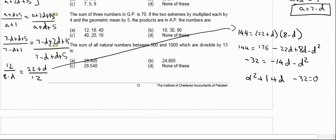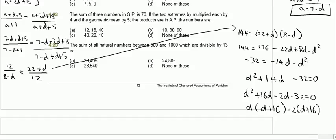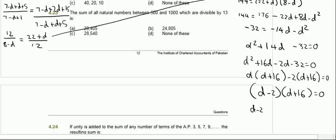We can solve this quadratic by factoring: d squared plus 16d minus 2d minus 32 equals 0, giving (d minus 2)(d plus 16) equals 0. Therefore d minus 2 equals 0, so d equals 2, or d plus 16 equals 0, so d equals minus 16.